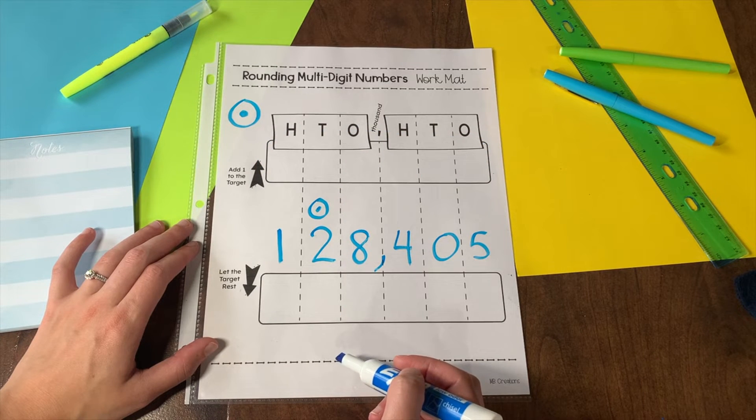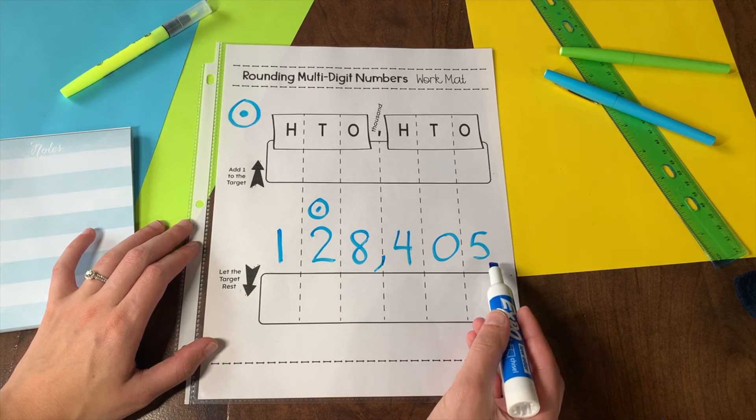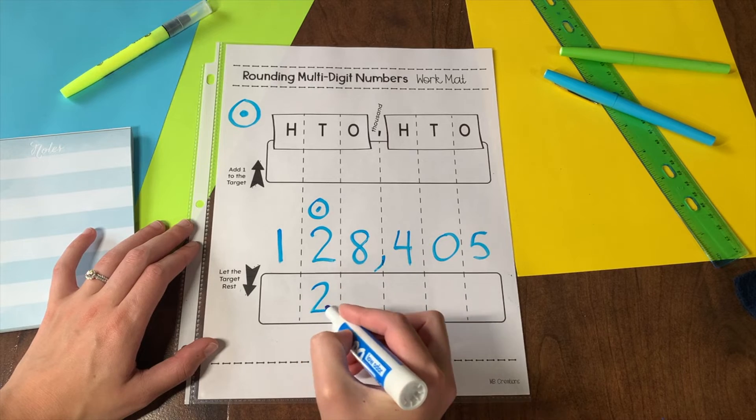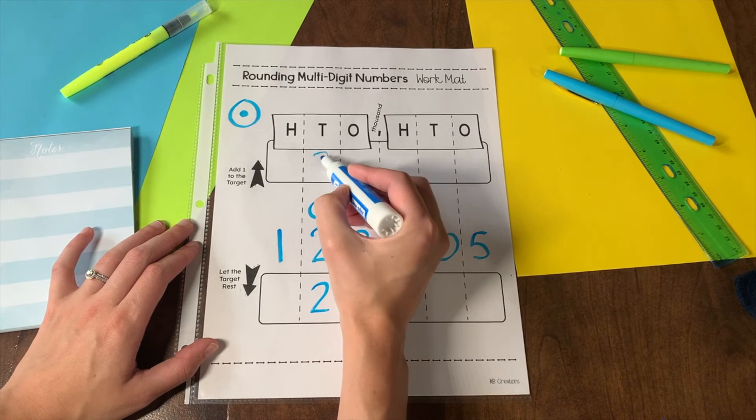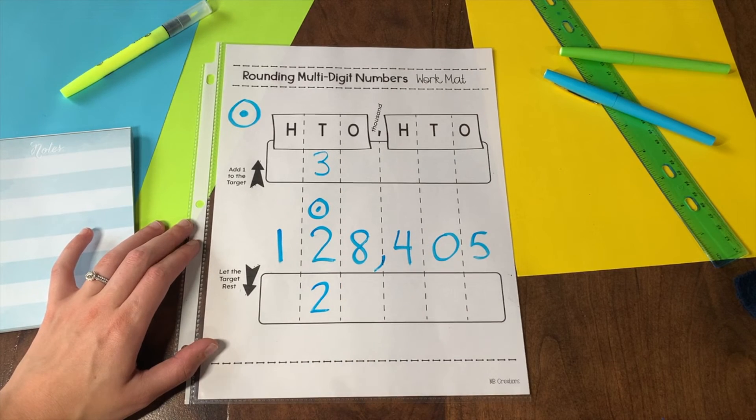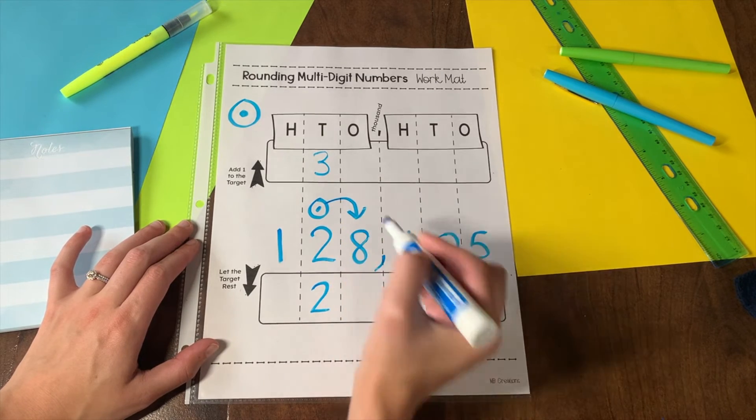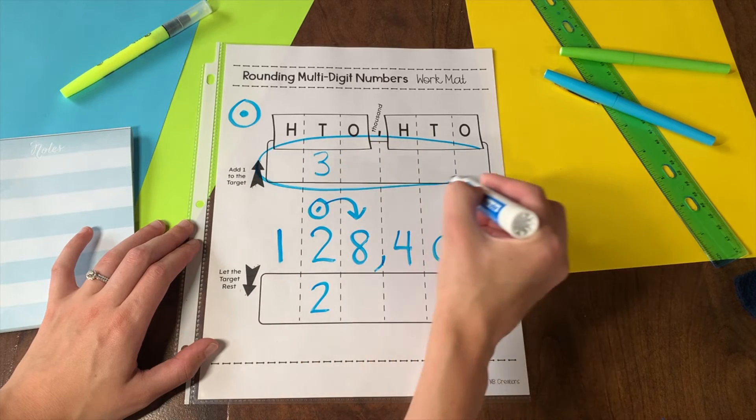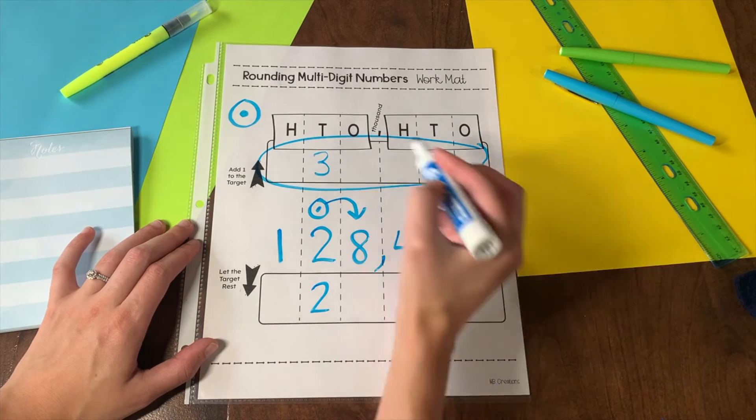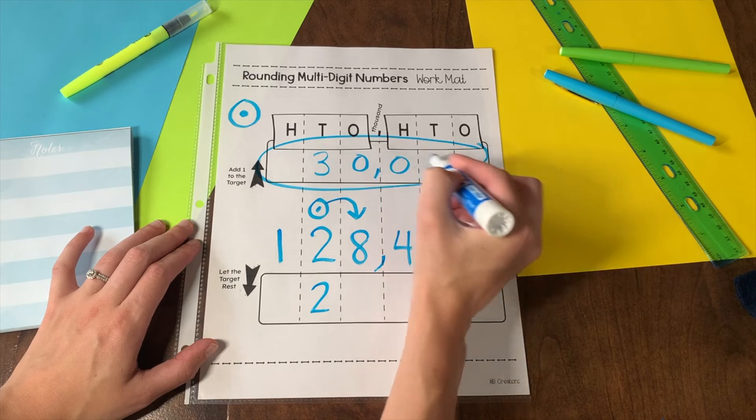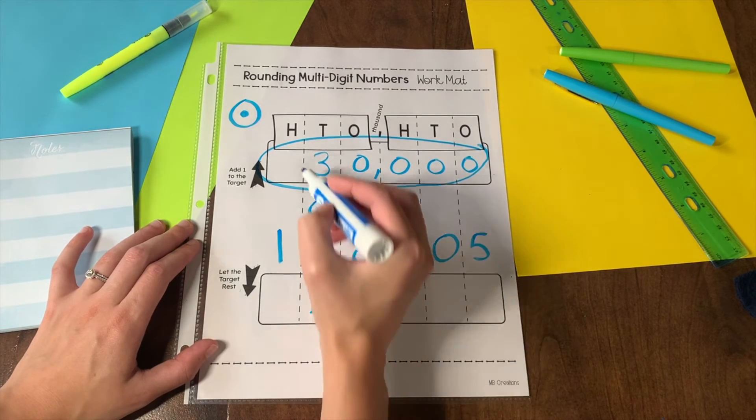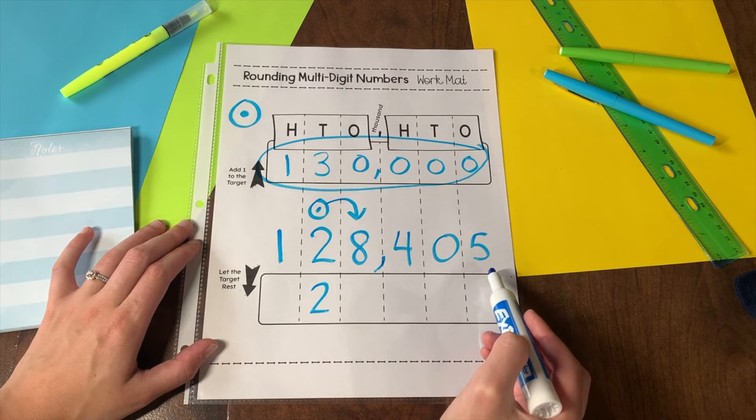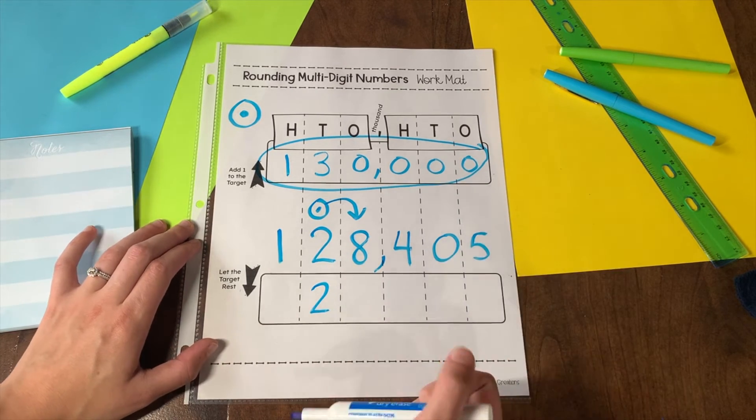In the number 128,405, I'm going to round to the ten thousands place. My target will either remain a 2 or it will increase by 1 and change to a 3. I look back at the number before, which is an 8. I'm going to be rounding up. All of the numbers behind my target become zero and the numbers in front stay the same. 128,405 rounds to 130,000.